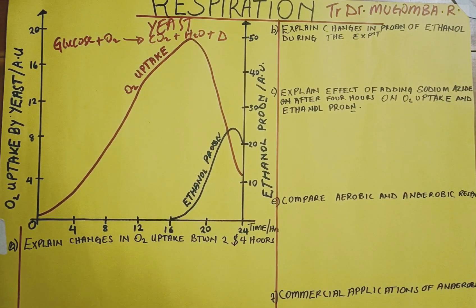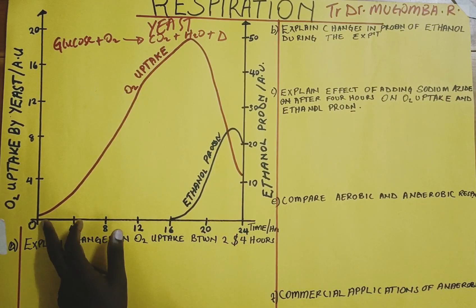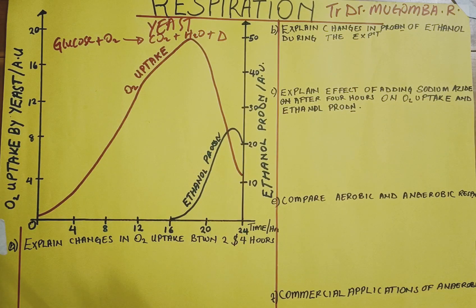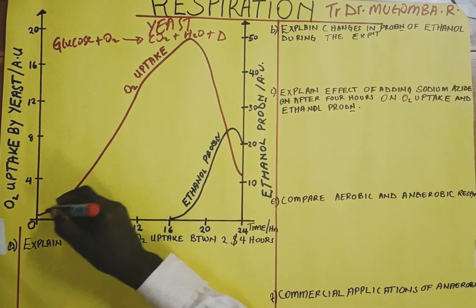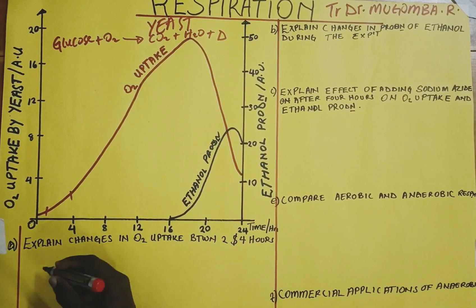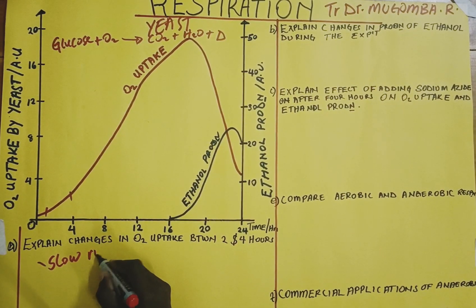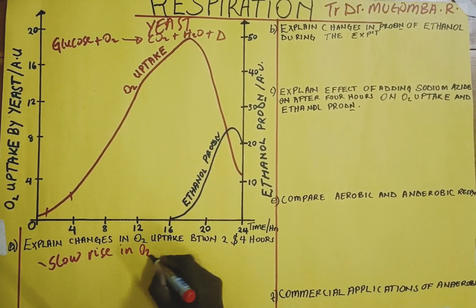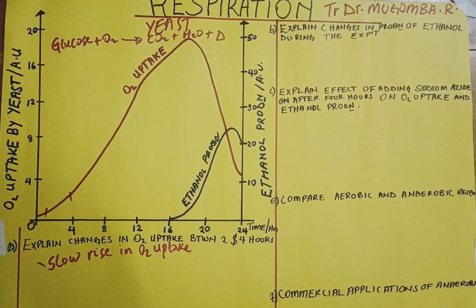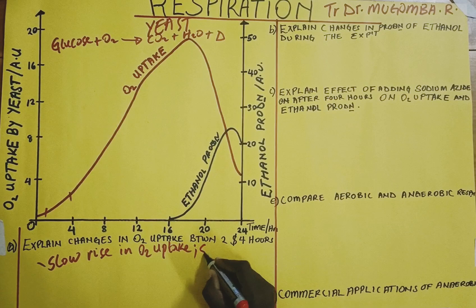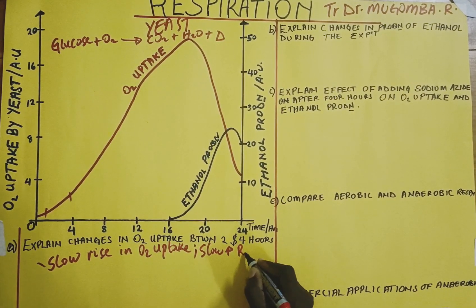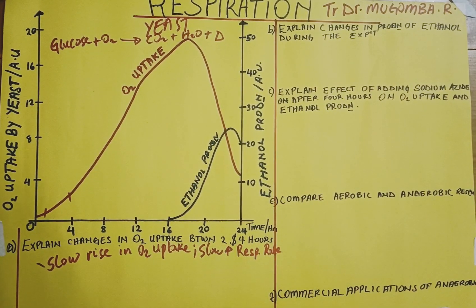We start with explaining the changes in the uptake of oxygen between two hours and four hours. From the graph, between two hours and four hours, we can clearly see there is a slow rise in oxygen uptake. This slow rise is explained by a slow increase in respiration rate - because the respiration rate is increasing slowly, that explains why there is a slow rise in oxygen uptake.